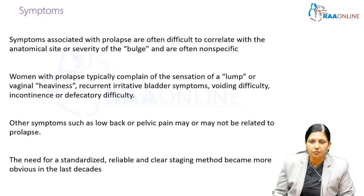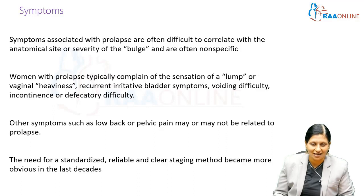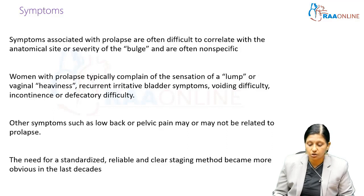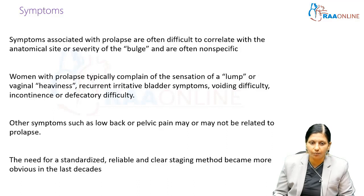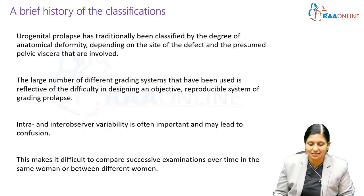Symptoms associated with prolapse are often difficult to correlate with anatomical site or severity of the bulge and are often nonspecific. Women with prolapse typically complain of a sensation of a lump or vaginal heaviness, recurrent irritative bladder symptoms, voiding difficulties, incontinence, and defecatory difficulties. Other problems such as low back or pelvic pain may or may not be related to prolapse. The need for a standardized, reliable, and clear staging method has become more and more obvious in recent decades.